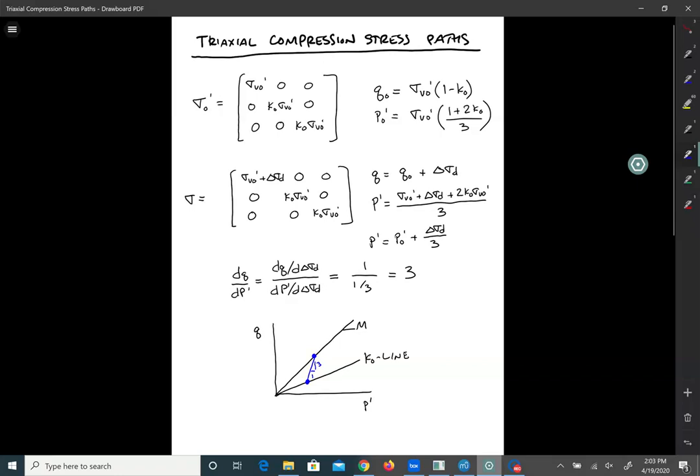The simple shear stress path was vertical. P prime stayed the same. In a triaxial compression stress path, P prime is increasing. So let's take a look at how I came to that conclusion.